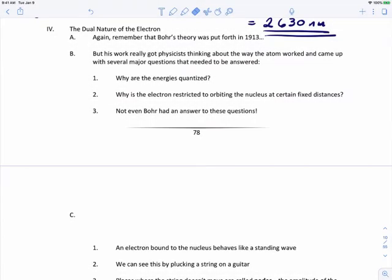With each stop in this story, we're getting closer to figuring out what's going on with the atom, especially the electrons. With the Bohr theory, Bohr put out his theory in 1913 and he really got physicists thinking about the way the atom works and came up with several major questions that still needed to be answered after the Bohr theory.